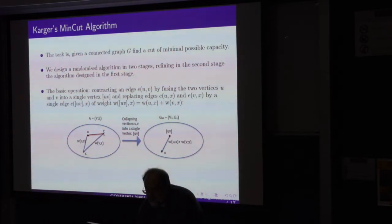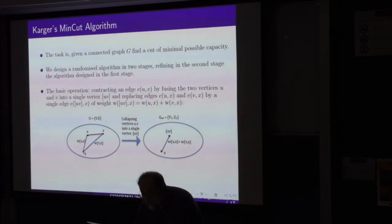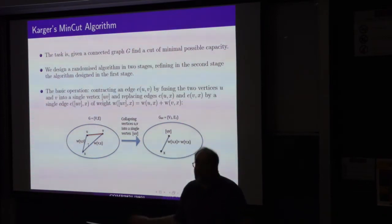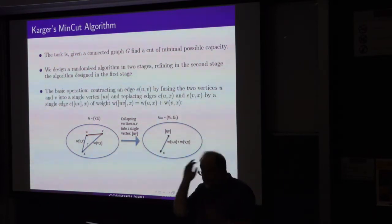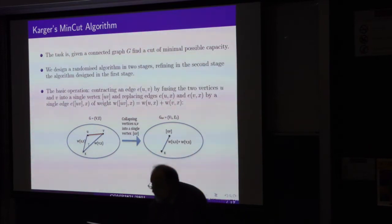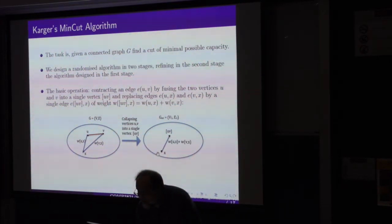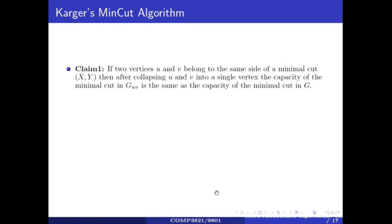If you have an edge U-V, you replace — you delete vertices U and V, and you introduce a new vertex U-V, such that another vertex is connected to U-V just in case it was either connected to U, or connected to V, or maybe connected to both. So you simply merge two vertices together, and you preserve the edges: any edge that went to either of the ends will be an edge between the outside point and the merged point. We denote this resulting graph by G of U-V.